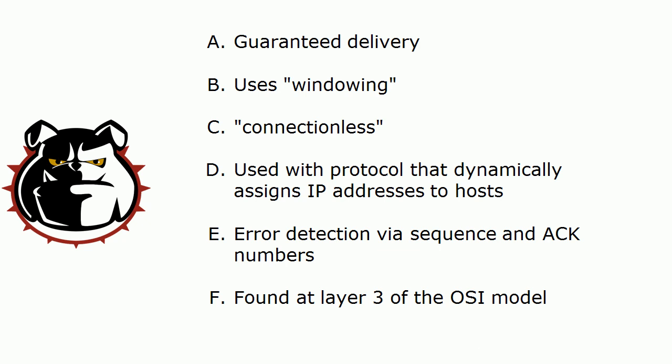A. Guaranteed delivery. B. Uses windowing. C. Connectionless. D. Used with protocol that dynamically assigns IP addresses to hosts. E. Error detection via sequence and ACK numbers. And finally F. Found at layer 3 of the OSI model. Now if you want to pause the video, certainly go right ahead. But we're going to go ahead and go through the answers right now.